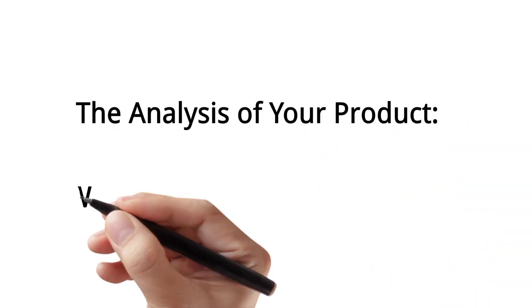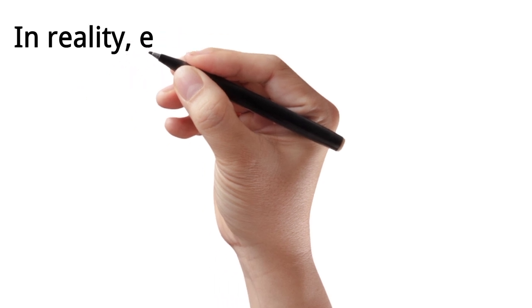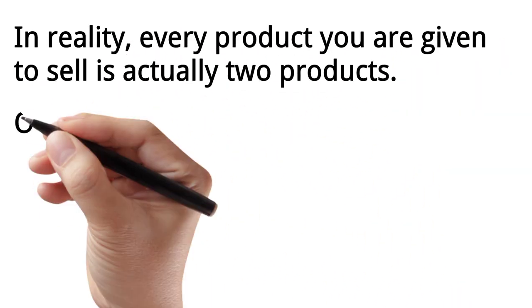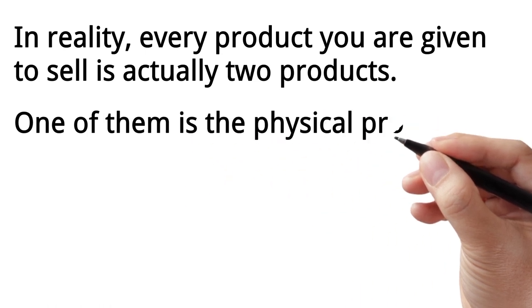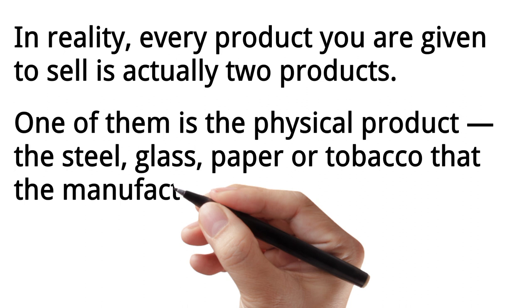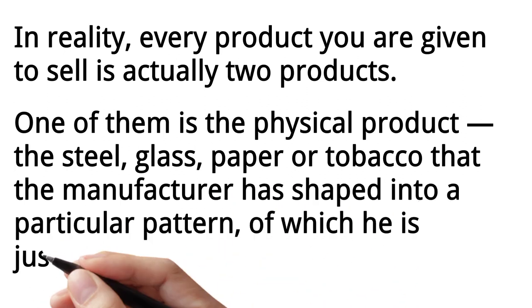The analysis of your product, what it is and what it does. In reality, every product you are given to sell is actually two products. One of them is the physical product, the steel, glass, paper or tobacco that the manufacturer has shaped into a particular pattern, of which he is justly proud.